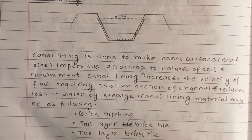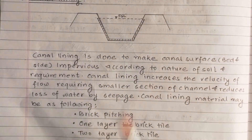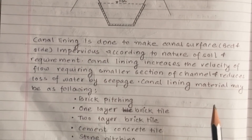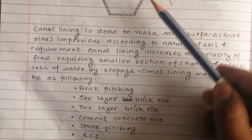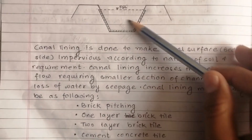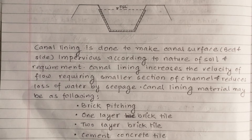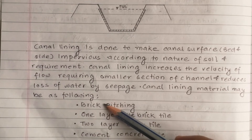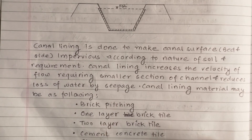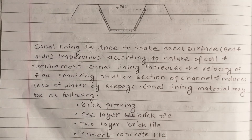Canal lining materials may be as follows: we can do one layer of brick pitching tiles, two layer brick pitching tiles, cement concrete tiles, and stone pitched tiles.